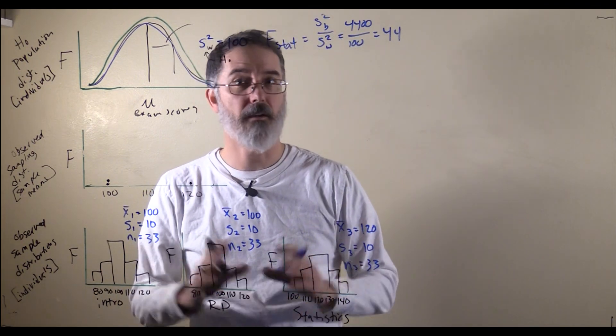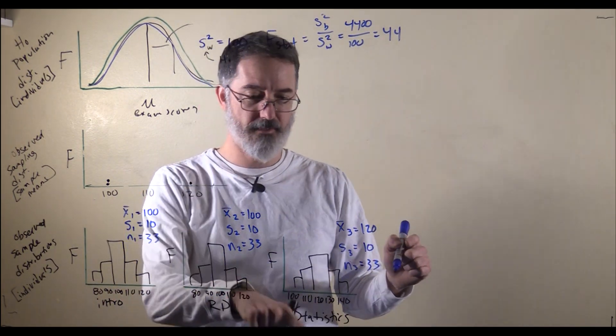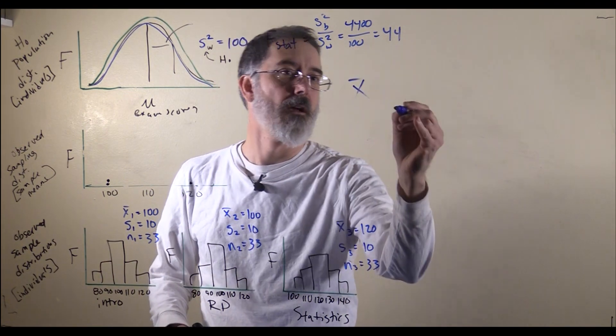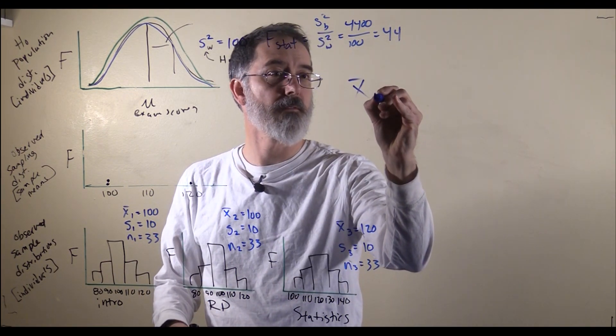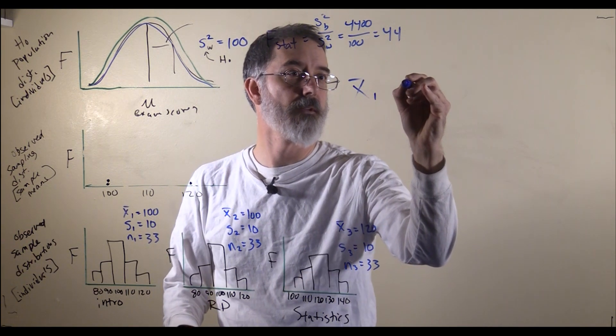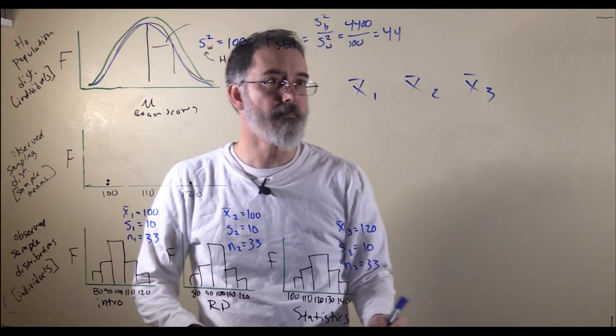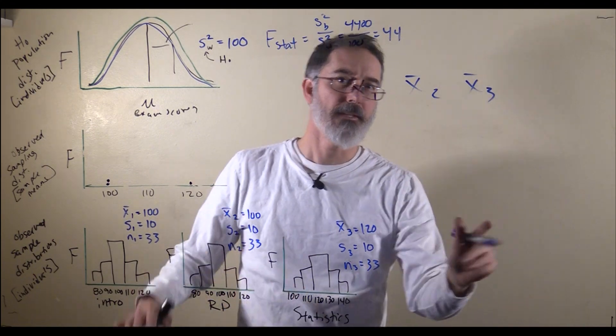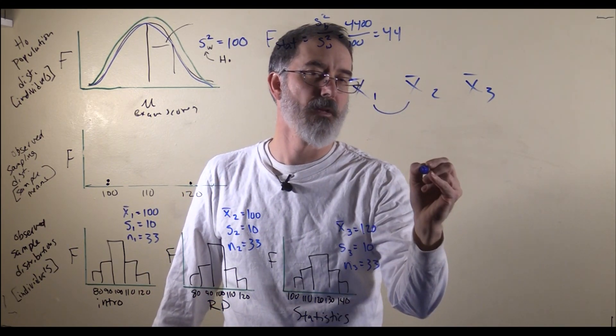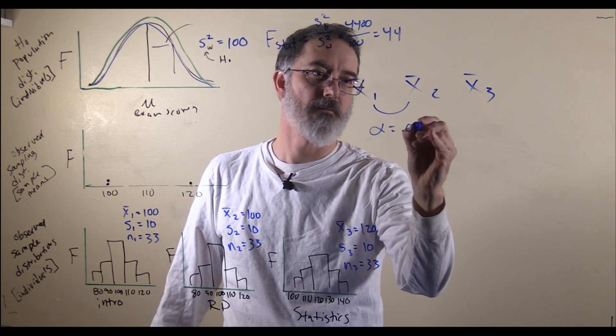The reason you can't just compare all the different means - if we have intro, research design, and statistics, those three different samples - if we do t-tests, the first t-test would be comparing these two, and that would have an alpha equal to .05.